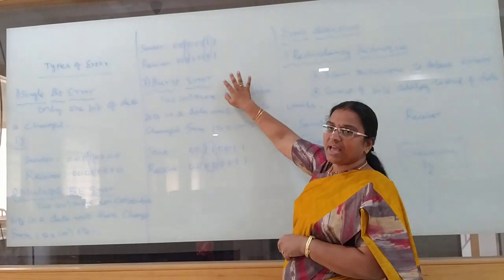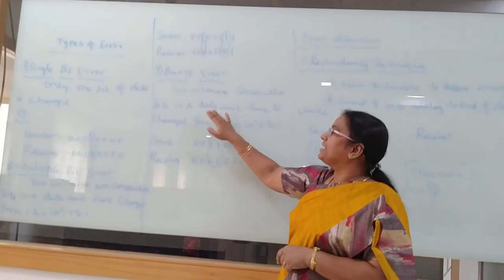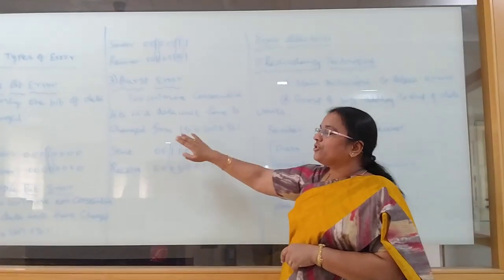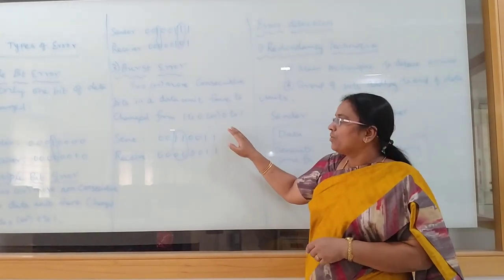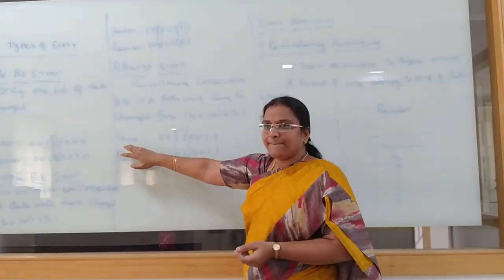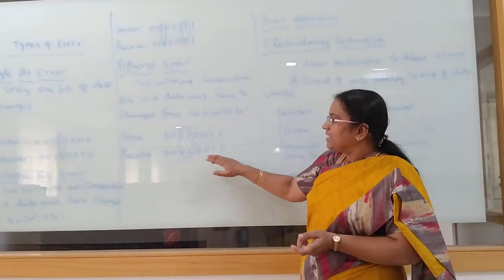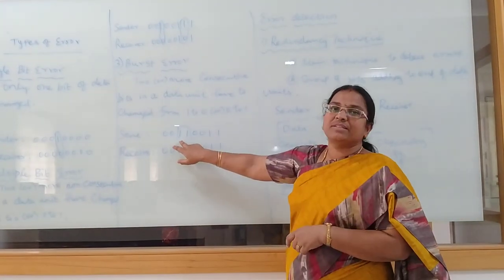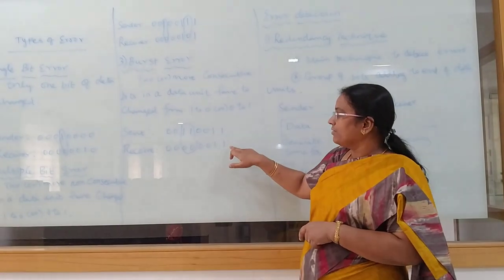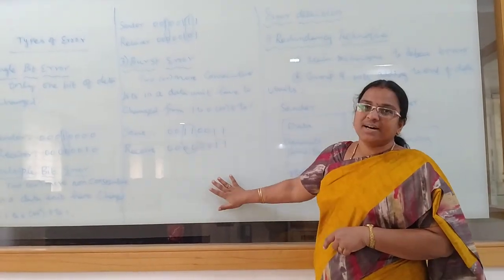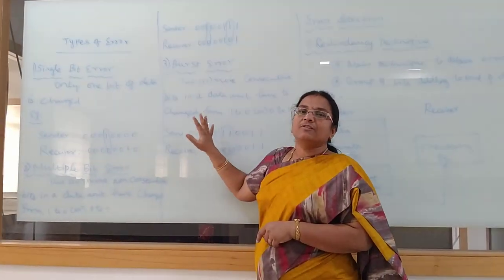The third one is burst error. Two or more consecutive bits in a data unit have changed from 1 to 0 or 0 to 1. For example, the sent data is this and the received data is this — here the consecutive bits are changed to 0. So this is called burst error. These are the three types of errors.